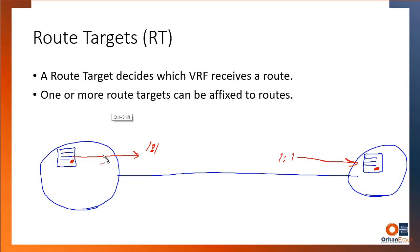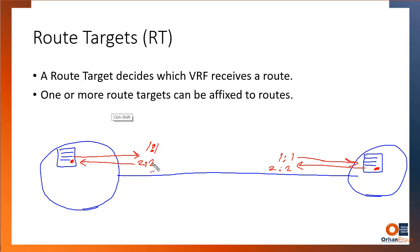When sending routes to another router, you export them with a specific route target value, like 1:1. The other side imports only routes tagged with 1:1. The sending side exports with 1:1, and the receiving side says anything arriving with 1:1 gets installed in this routing table. Similarly, the other side can export with 2:2, and this side imports 2:2. The values can be the same on both sides — what matters is the matching export and import values.